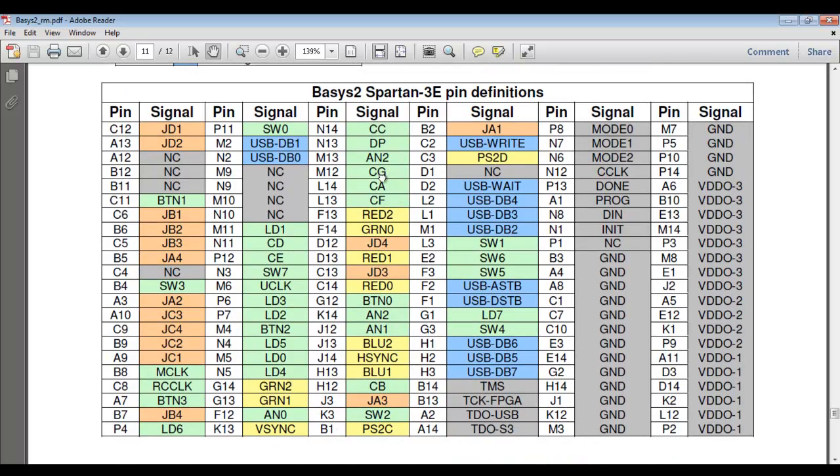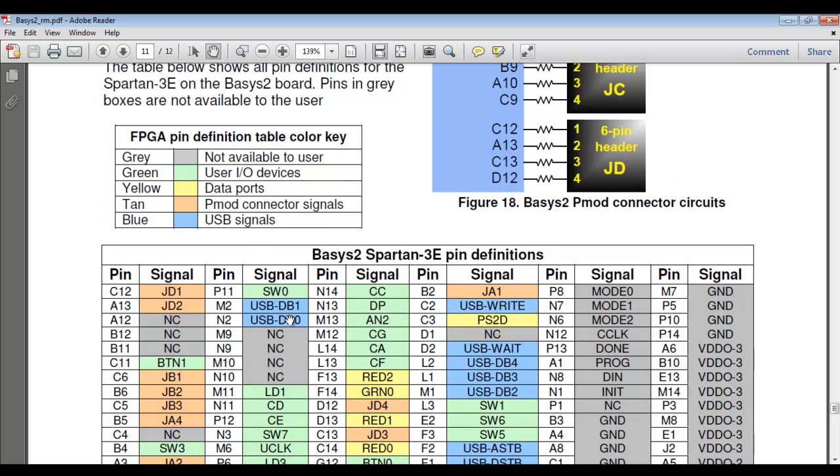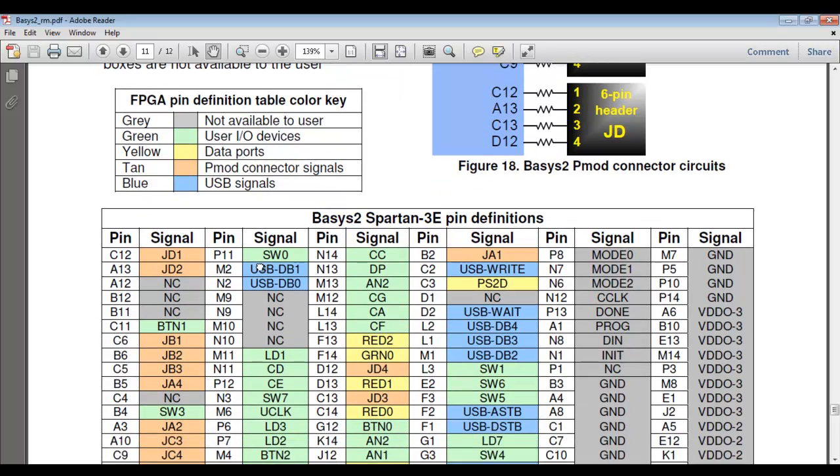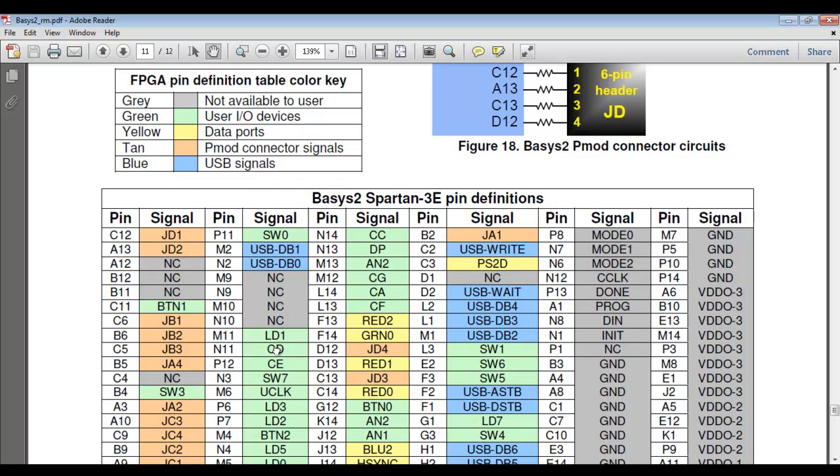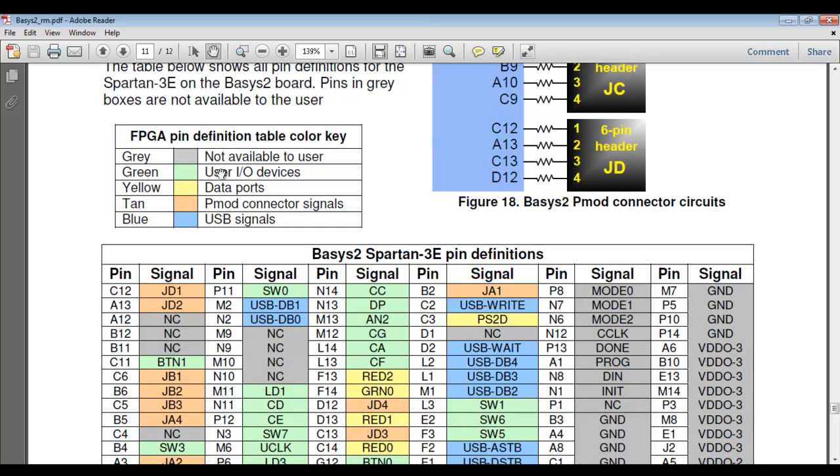are ground or VCC, green indicates user IO devices where you can connect your defined circuit, yellow shows data IOs, and blue shows USB signals. The only pins that users can change or define are the green ones.